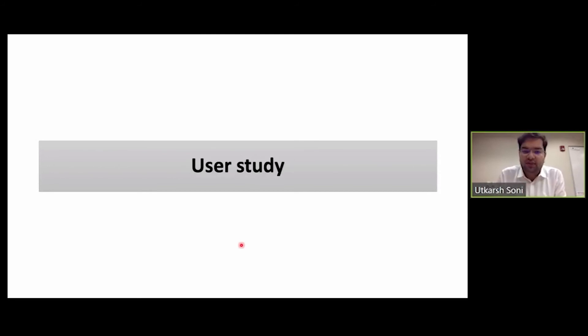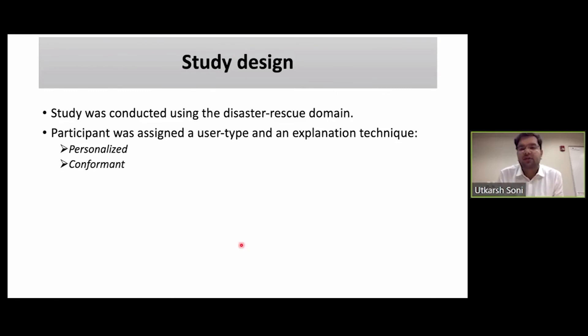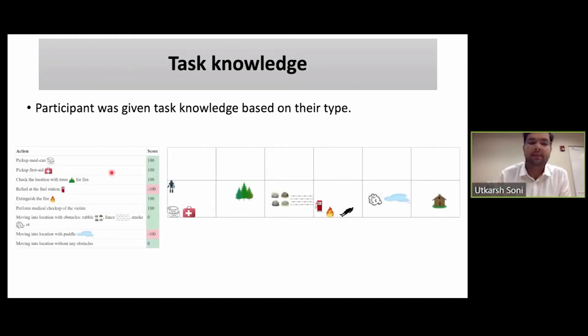Coming to the user study. We did a between-subject user study over Zoom, and we had a web interface for the study. The study was conducted using the disaster rescue domain. The participants were assigned a user type and an explanation technique. The explanation technique was either personalized explanation or conformant explanation. The personalized explanations were generated by our QMDP algorithm, whereas for the conformant explanations, we generated all explanations such that a transition would be explicable to users of any type. So in that case, it wasn't personalized to the particular user's type.